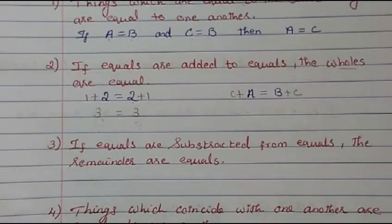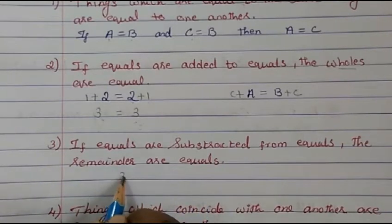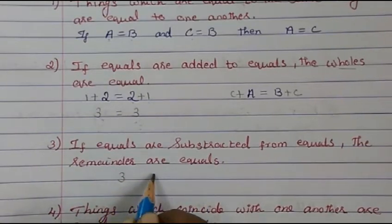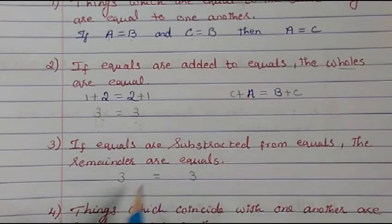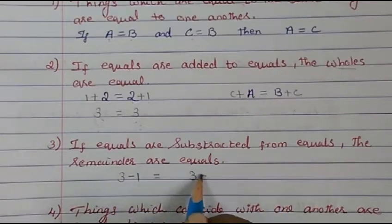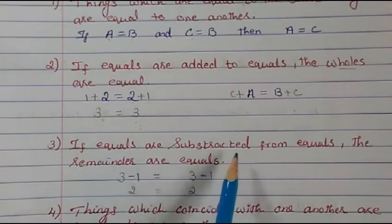The third axiom: if equals are subtracted from equals, the remainders are equal. For example, 3 equals 3. If we subtract 1 from both sides, we get 2 on both sides. So the remainders are equal.